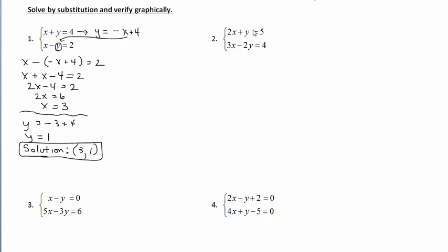For Example 2 using substitution, we look for a variable with a coefficient of 1. The only one fitting that description is y in the top equation with a coefficient of 1. Solving that equation for y: subtract 2x and keep the plus 5, giving y equals negative 2x plus 5. Then in the other equation, wherever we see y, substitute in negative 2x plus 5.